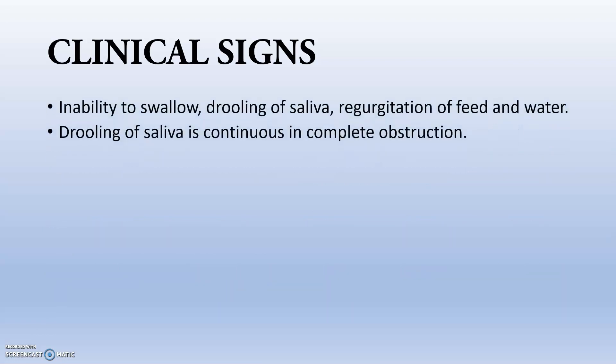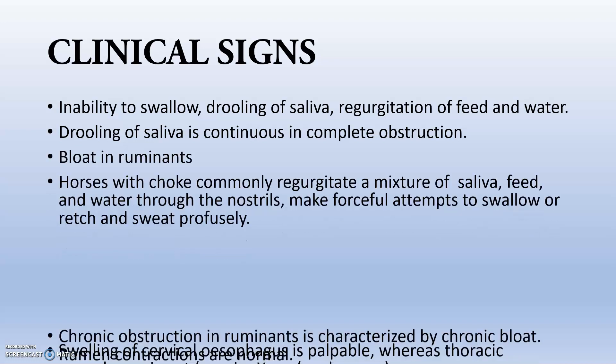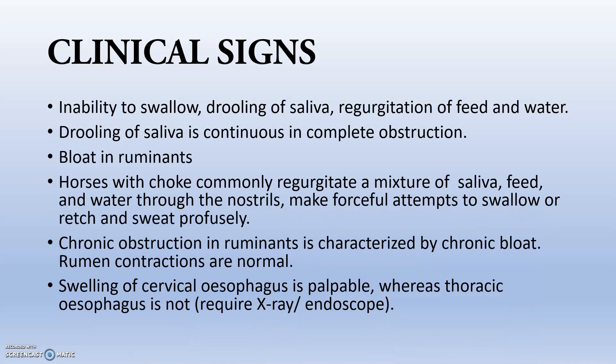Further clinical signs include inability to swallow, drooling of saliva, and regurgitation of feed and water. Drooling of saliva is continuous in complete obstruction. Bloat occurs in ruminants. Horses with choke commonly regurgitate a mixture of saliva, feed, and water through the nostrils, make forceful attempts to swallow and retch, and sweat profusely. Swelling of the cervical esophagus is palpable, whereas the thoracic esophagus is not palpable.